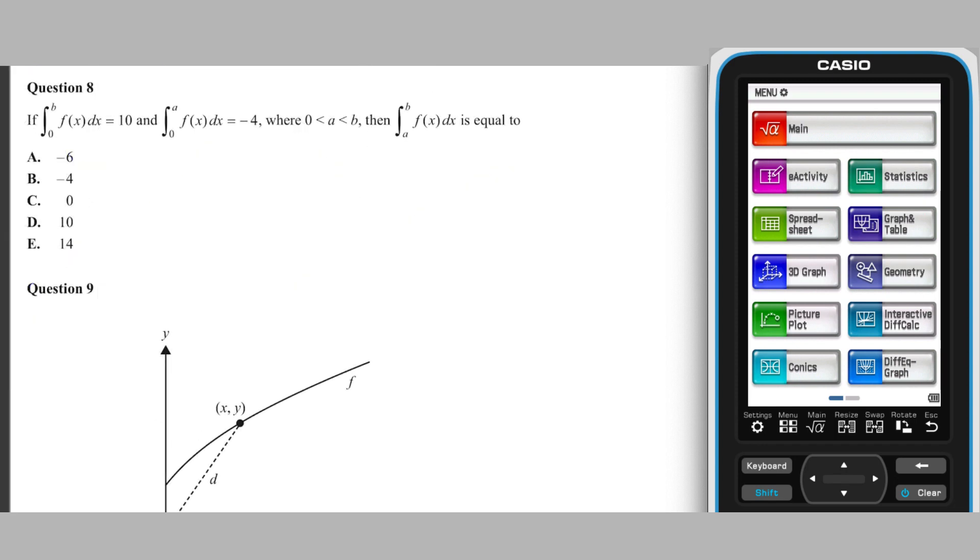Question 8 gives us information about the definite integral of f of x over the interval from 0 to b, which is equal to 10, and then focuses on this interval split into 2, from 0 to a and from a to b. This splitting of the interval suggests that this property of definite integrals will be useful.